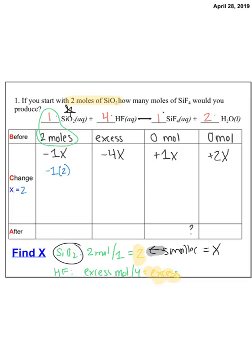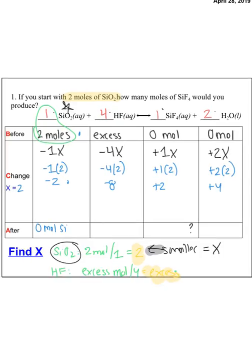So we're going to plug in negative 1 times 2, negative 4 times 2, 1 times 2, plus 2 times 2. So that's minus 2, minus 8 when you multiply, plus 2, plus 4 when you multiply. So now the last step is we're going to take our before, and we're going to subtract from it the change. 2 minus 2 is 0 moles of SiO2 remaining. Excess minus 8 is going to give us excess moles of HF remaining. And then 0 plus 2 gives us 2 moles of SiF4 produced. And 0 plus 4 gives us 4 moles of H2O produced. This question asks for how many moles of SiF4 would you produce, so there's my answer right there. 2 moles of SiF4 will be produced.